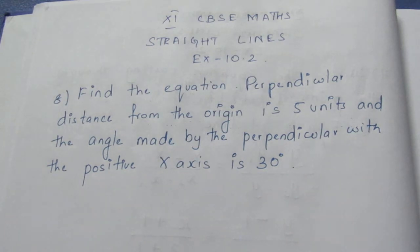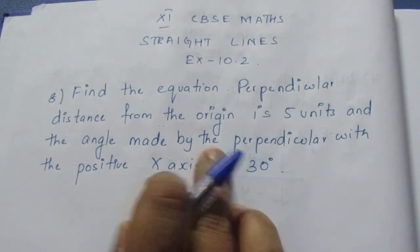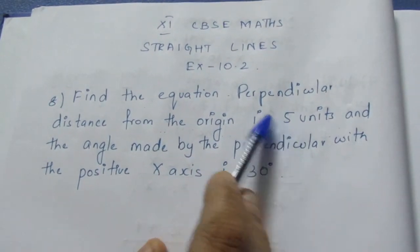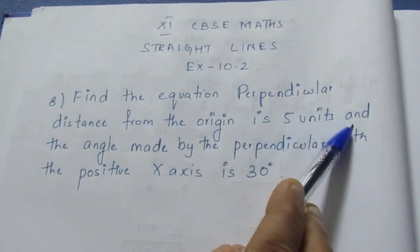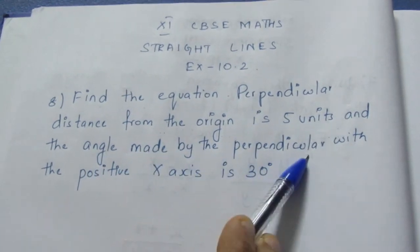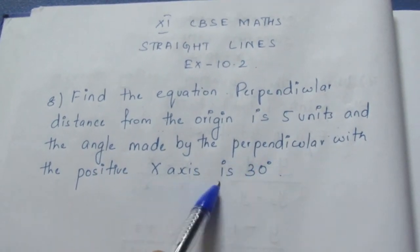Let's see the question. Find the equation where the perpendicular distance from the origin is 5 units, and the angle made by the perpendicular with the positive x-axis is 30 degrees.